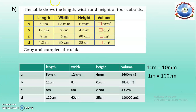To understand this further, see part B. A table shows the length, width and height of four cuboids — parts A, B, C and D — and you have to find the volume. Before solving, check in which unit you need to find the answer.